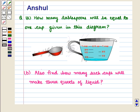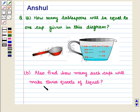Hello and welcome to the session. In this session we are going to discuss the following question. Part A: How many tablespoons will be equal to 1 cup, given in this diagram? Part B: Also find how many such cups will make 3 quarts of liquid?